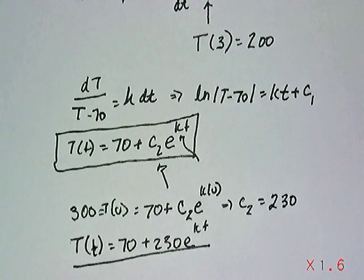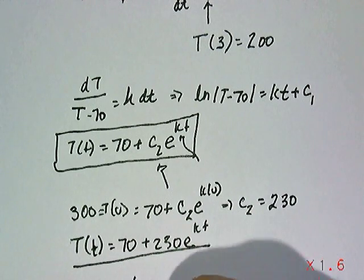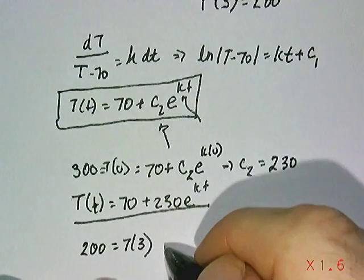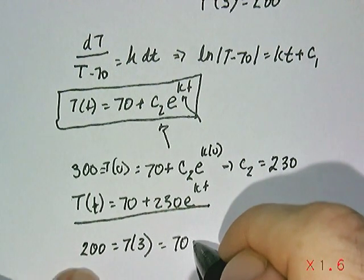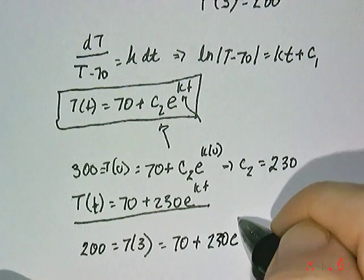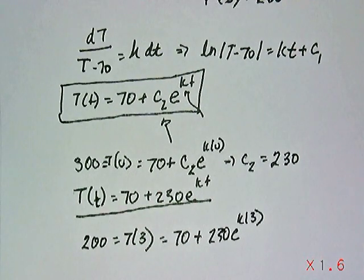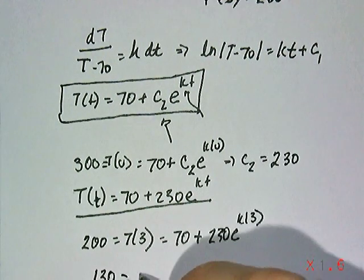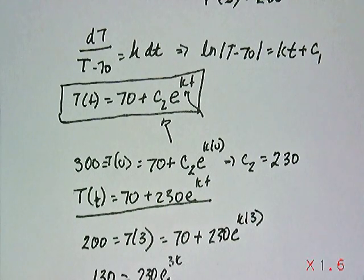Almost there. Now, again, we need some other information, but we also know that after three minutes, that the temperature is 200. So now plug that into the equation. For t equal to 3, set it equal to 200. We would get 230 times e to the k times 3 power, like that. And a little reduction would give us 130 then is going to be 230 times e to the 3k.